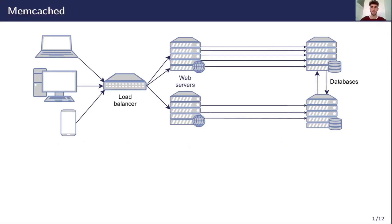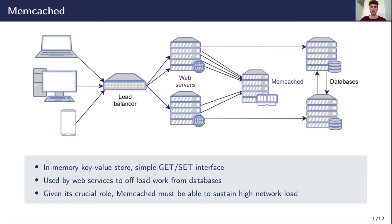Traditionally, web applications rely on databases to store the data they need on disks. However, disks are slow, which makes database accesses expensive. As the load increases, they can become a bottleneck, which further increases the processing time of client requests. To address this problem, Memcached uses memory to cache data from traditional databases.